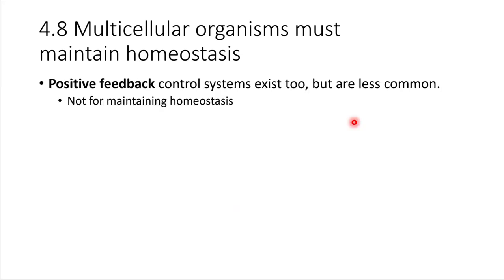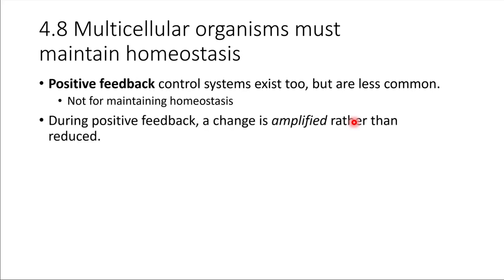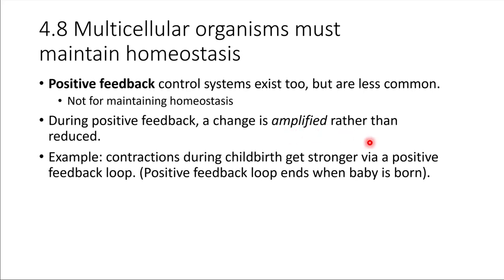There are positive feedback control systems that function in human biology too, but they are far less common. Most of the time, positive feedback is not for maintaining homeostasis, but rather for accomplishing other things. A great example is during childbirth — contractions get stronger and stronger until finally the baby is expelled from the body through a positive feedback loop. The change is actually being amplified. There does have to be an end point for positive feedback loops; they can't just go on indefinitely. In this case, it's the birth of the child, and then the positive feedback loop stops.